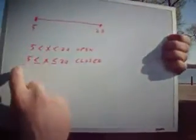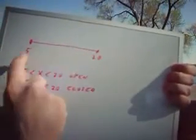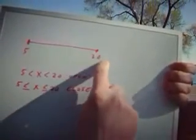Now a closed interval is when you have all the points between 5 and 20, but you also include the points 5 and 20. And that's what an interval is.